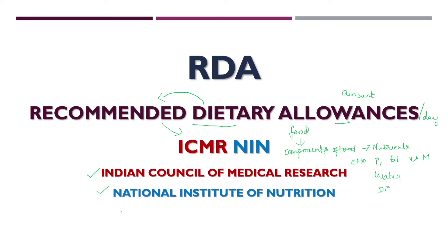ICMR and NIN collect data and based on that data they make calculations to arrive at the RDA. RDA is a very big table because they have to find the RDA for each and every nutrient — carbohydrates, protein, fat, vitamins A, D, E, K, B, C — and a lot of minerals.